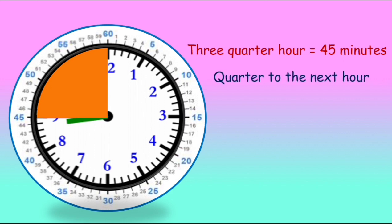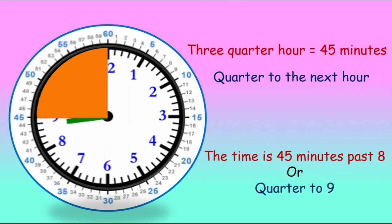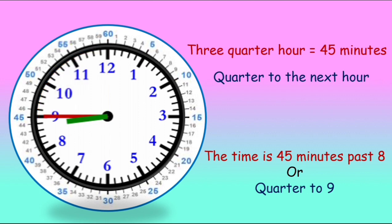It is a quarter to the next hour. The time is read as 45 minutes past 8 or a quarter to 9, because it needs another 15 minutes — another quarter — to go to the next hour. After 8 the next is 9, hence we read it as 45 minutes past 8 or a quarter to 9.